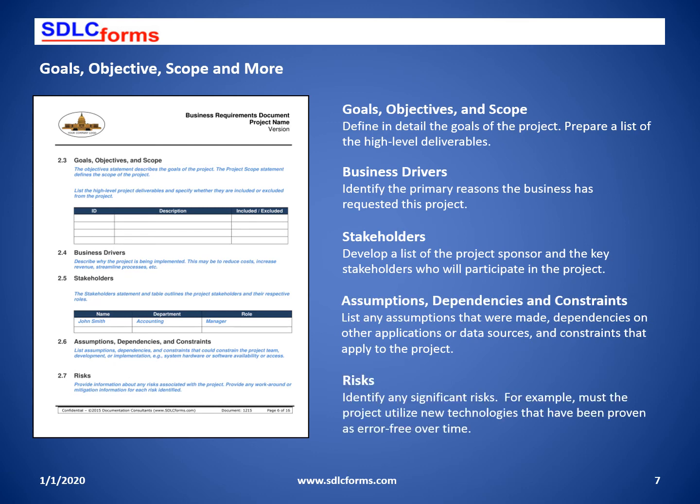Precisely define the business goals. The list of deliverables should identify a meaningful description of the deliverable and whether it is included or excluded from this phase of the project. The business driver should identify what motivated the business — was it to reduce costs, meet regulatory demands, process improvement, etc.